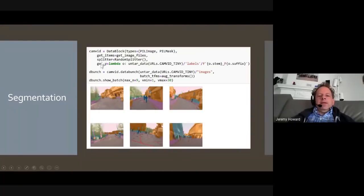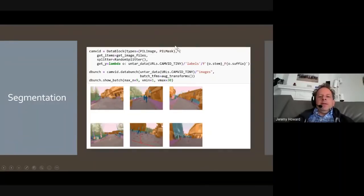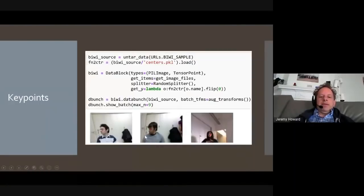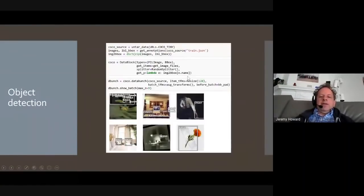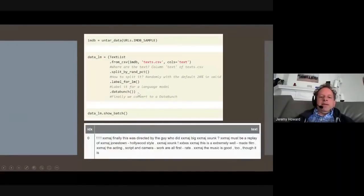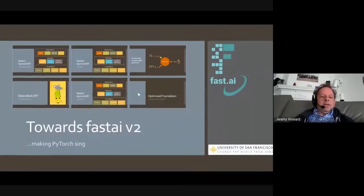So here's a data block for segmentation. And you can see really the only thing I had to change here was that my dependent variable has been changed from category to pillow mask. And again, automatically our show batch works. And we can train a model from that straight away as well. You could do key points. So here I've just changed my dependent variable to tensor point. And so now it knows how to behave with that. Object detection. So now change my dependent variable to bounding box. And you can see I've got my bounding boxes here. Text. And so forth.